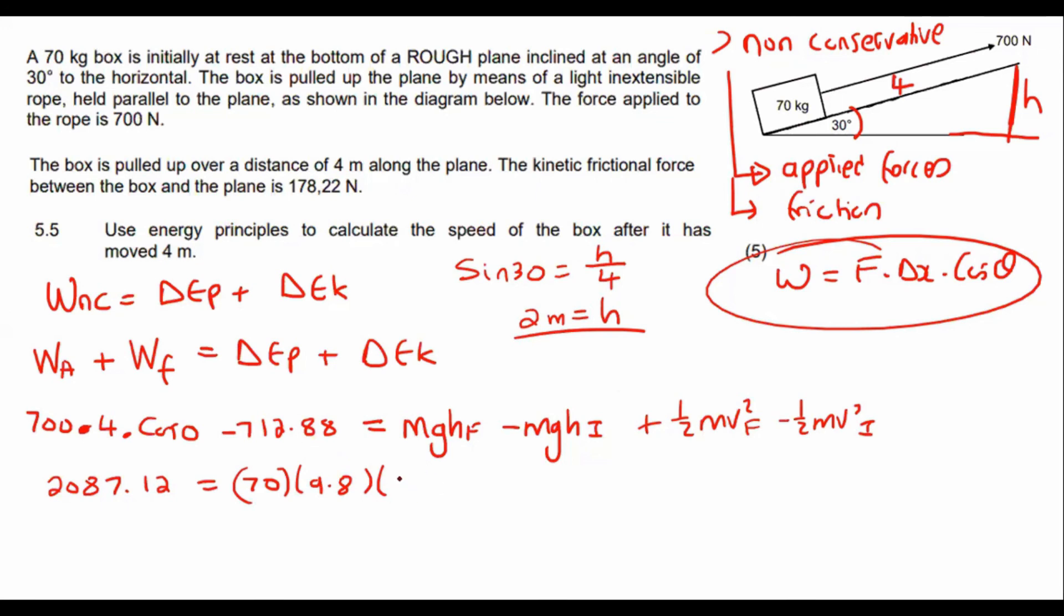Well, where did I get seven? Swear there's no seven. Um, two meters, uh, minus the initial height. Well, the initial height is over here. So that'll be zero. So you can say 70 times 9.8 times zero plus a half times 70. The final velocity is what we are trying to find. And the initial velocity is zero.